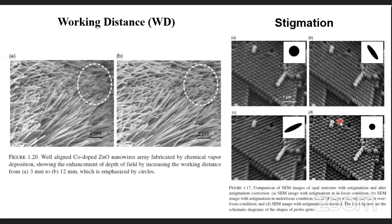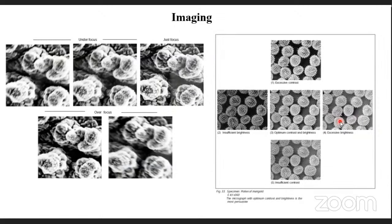Stigmation (astigmatism) is a problem with the lens that can be corrected by the technical staff by adjusting the current. When analyzing, you should know the mode, acceleration voltage, and working distance, then adjust the lenses. The important point is imaging — with an experienced technical staff, it is easy to take very nice images. You can see under-focused, just-focused, and over-focused images. We must capture just-focused images, adjusting brightness and contrast optimally for good publication.